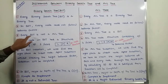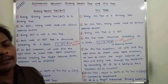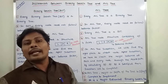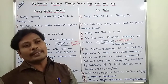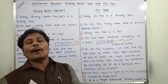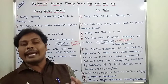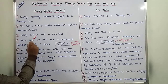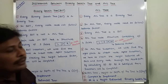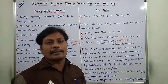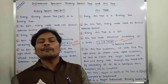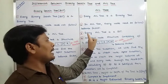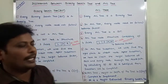Third point: every BST is not an AVL tree, because every binary search tree is not a balanced tree. In a binary search tree, the height is not balanced. Because of that reason, every BST is not an AVL tree. But every AVL tree is a BST, because in the AVL tree we have to follow the binary search tree property. Hence, every AVL tree is a binary search tree.